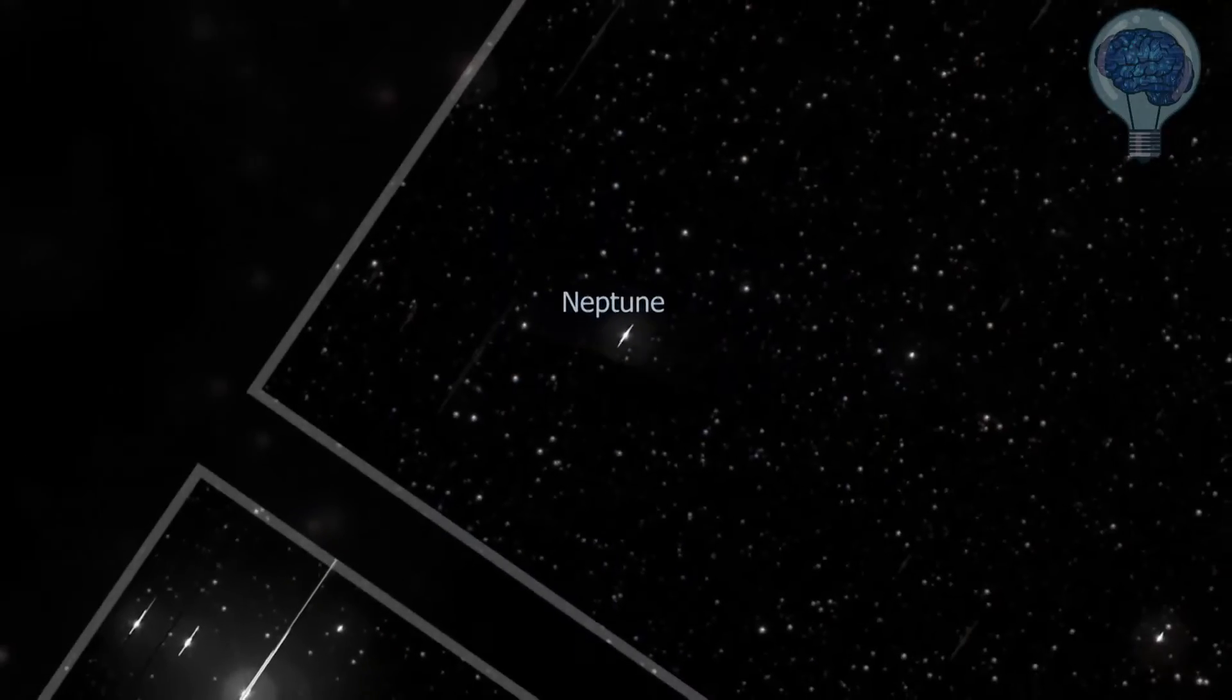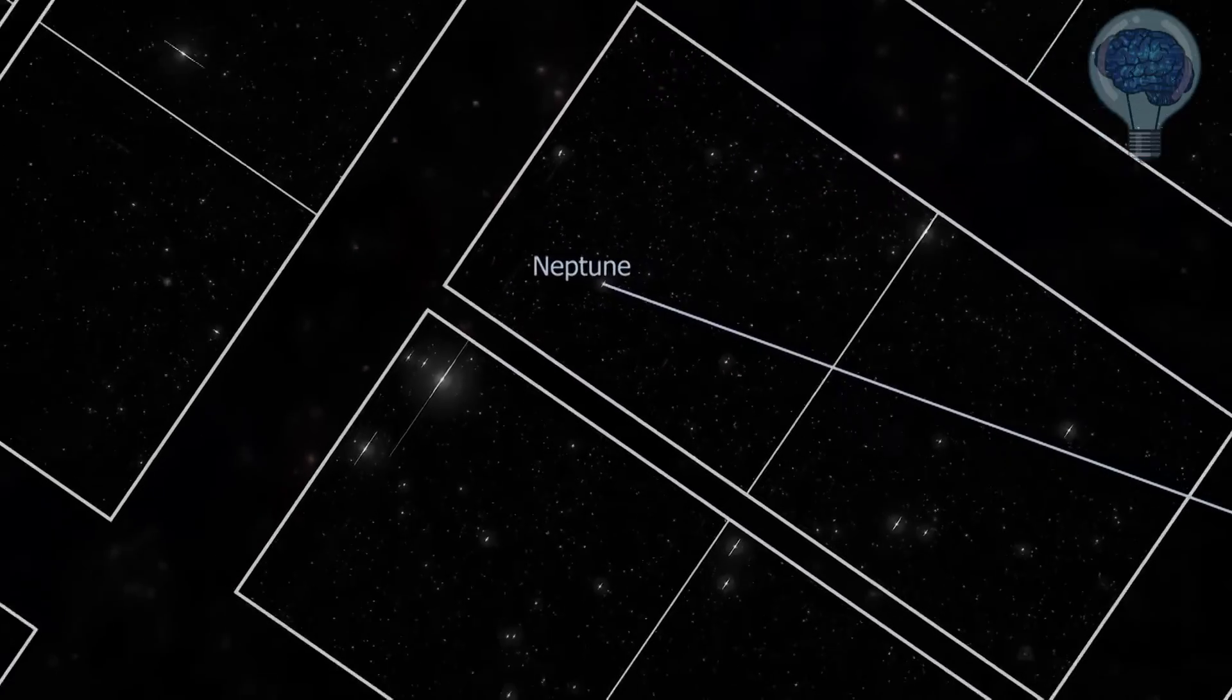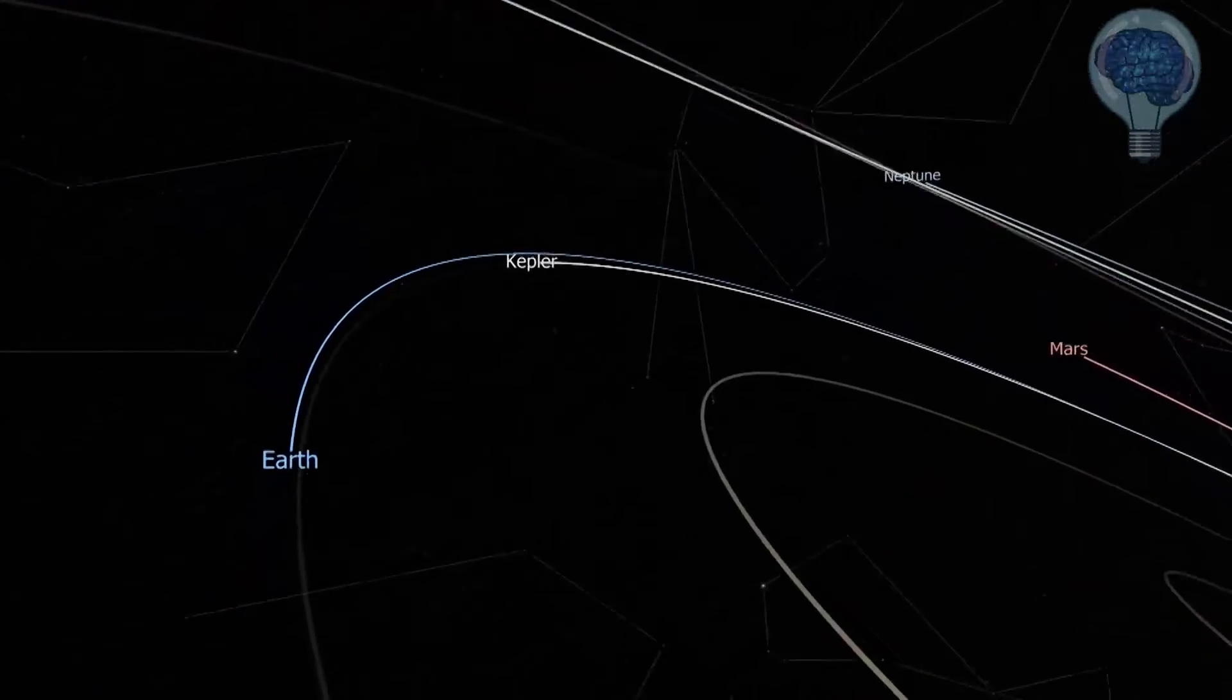By measuring tiny variations in Neptune's brightness, Kepler teased out clues to the planet's hidden dynamics, pushing the limits of its detector, and laying the groundwork for more detailed studies of exoplanets in the years ahead.